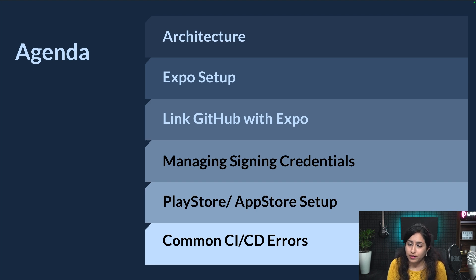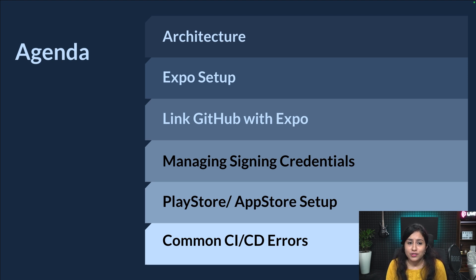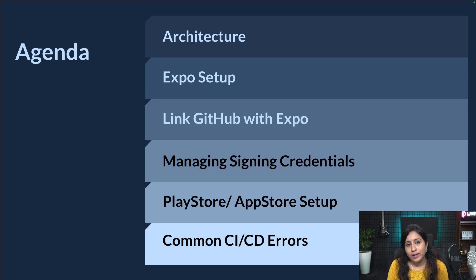Now that we know manual builds are not effective for the longer run, let's move on to how to actually use Expo as a CI/CD tool, which will do everything for us — right from building to signing and submitting our app automatically with just one code push. The agenda is: exploring the architecture of the build flow, Expo setup, linking our GitHub repo to Expo, managing signing credentials for both Android and iOS, Play Store and App Store setup, and at the end, common CI/CD errors.